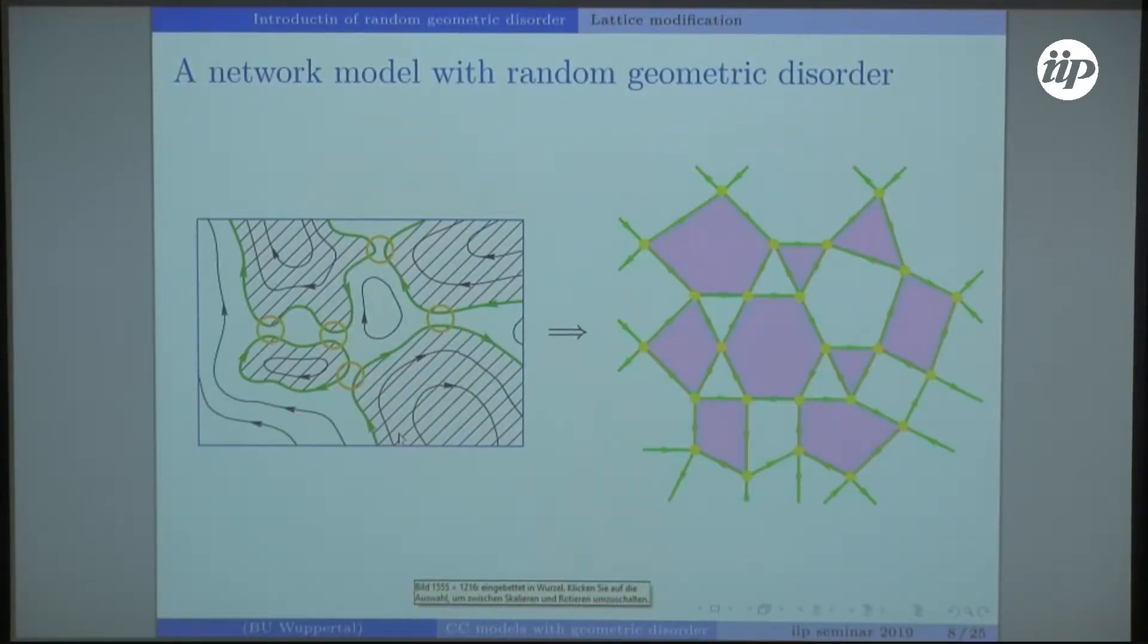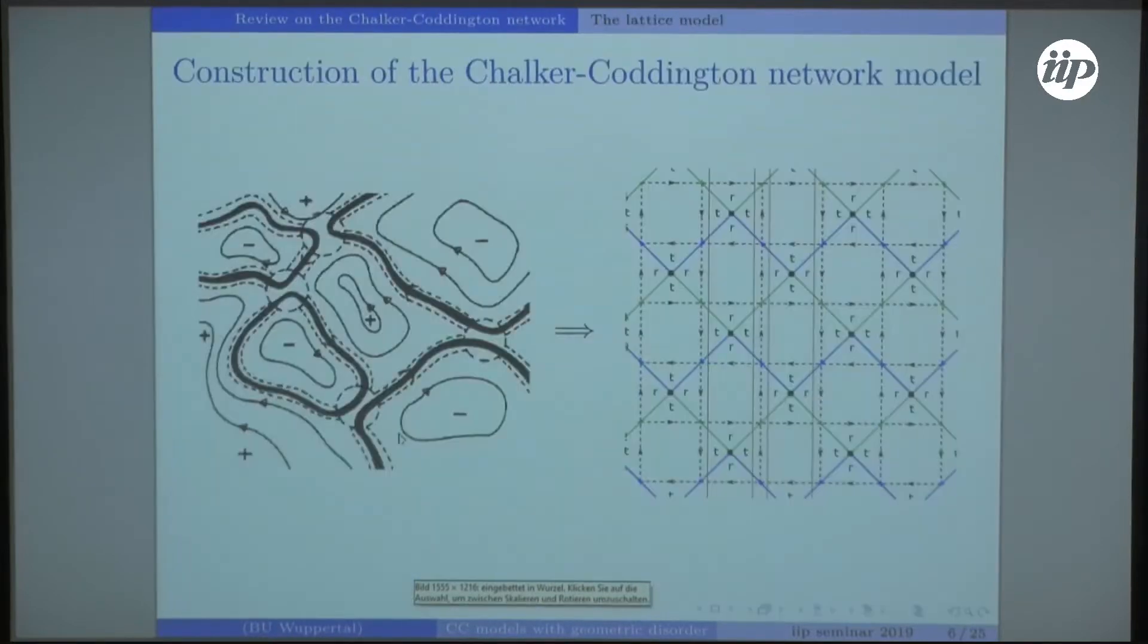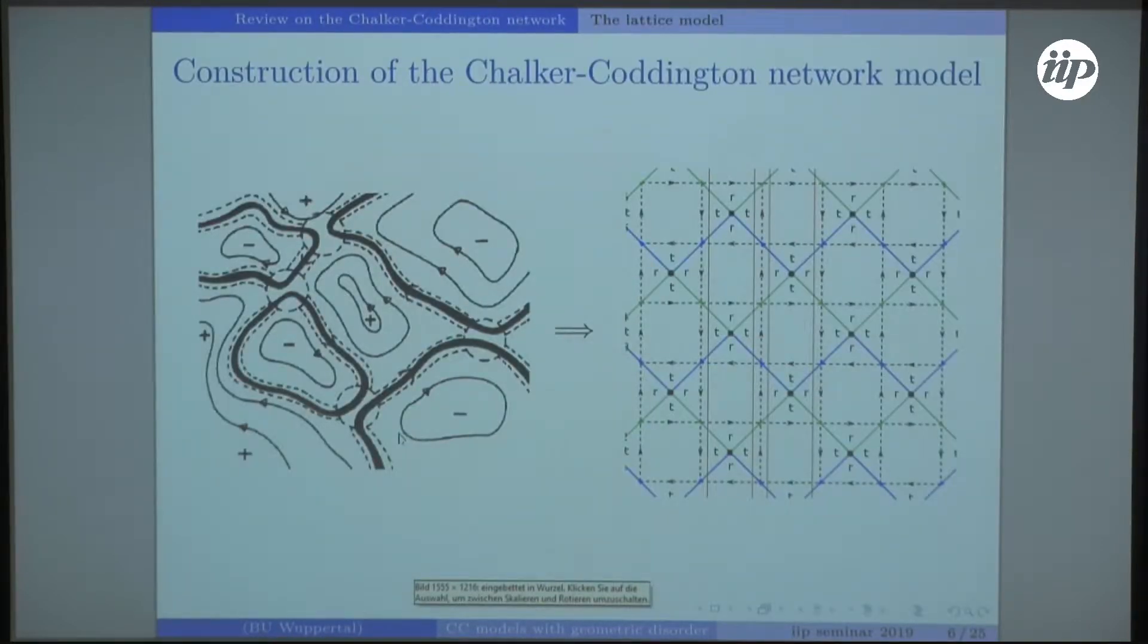We introduce a new idea which has not yet been studied, namely random geometry in the network. This again is the picture with the electron traveling in the potential field.